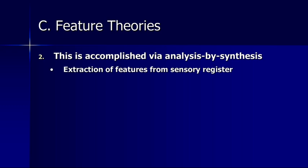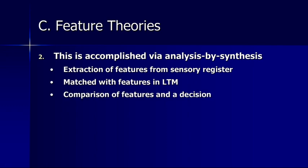This entire process is accomplished by what we call analysis by synthesis. We extract individual features from what's called the sensory register, which is simply a temporary holding place for sensory information — a very brief memory system. We then match the features that have been extracted in long-term memory, compare those features, and then a decision is made about what it is that we're seeing. So we extract the features, look at their combination, compare it with information we have in memory, and then make some sort of decision about the object in front of us.